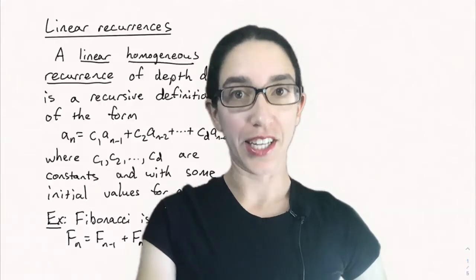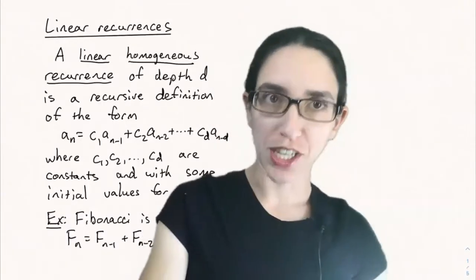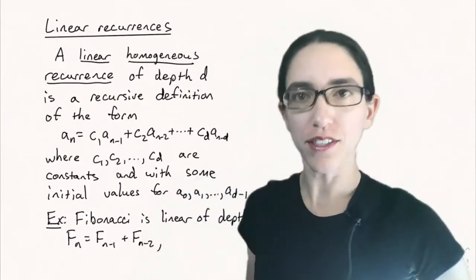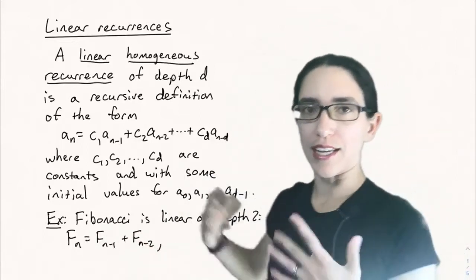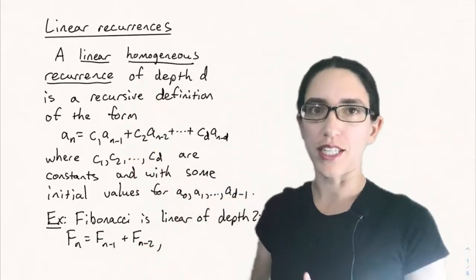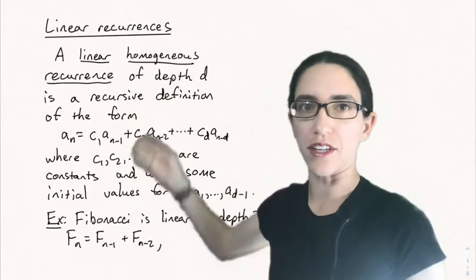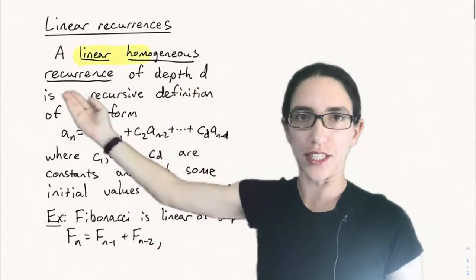Hello, and welcome back to Math 301 Combinatorics at CSU. Today we're going to be talking about linear recurrences. This is a particular type of recurrence — we've started the chapter on recurrences in the last video, and now we're going to be talking about a very common type called a linear homogeneous recurrence.